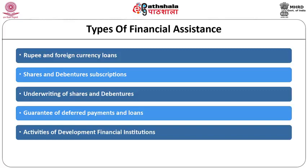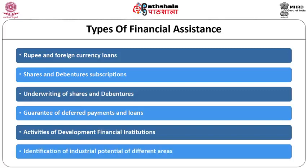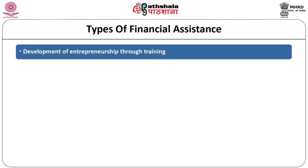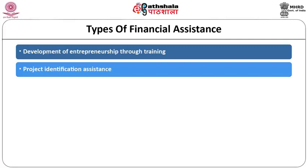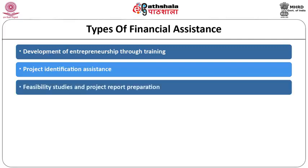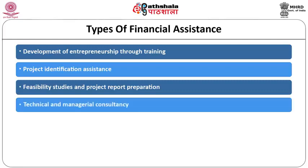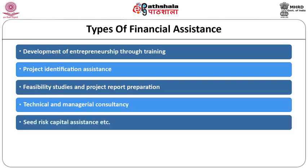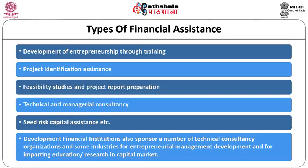Types of financial assistance: Few important forms of financial assistance are rupee and foreign currency loans, share and debenture subscriptions, underwriting of shares and debentures, and guarantee of deferred payments and loans. Activities of development financial institutions include: identification of industrial potential of different areas; development of entrepreneurship through training; project identification assistance; feasibility studies and project report preparation; technical and managerial consultancy; seed risk capital assistance. Development financial institutions also sponsor a number of technical consultancy organizations and some industries for entrepreneurial management development and for imparting education or research in capital market.